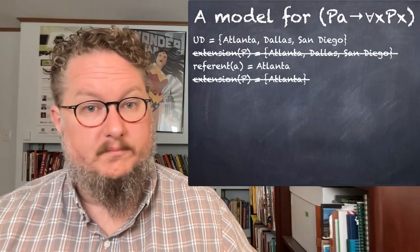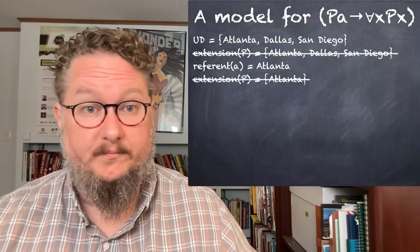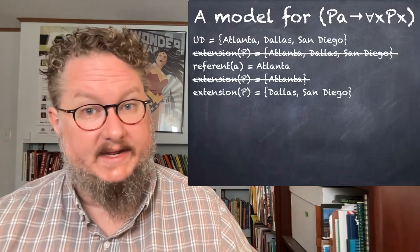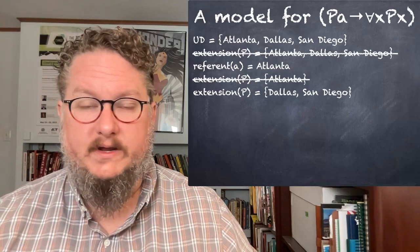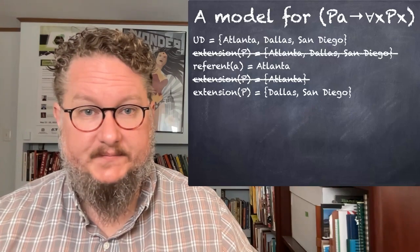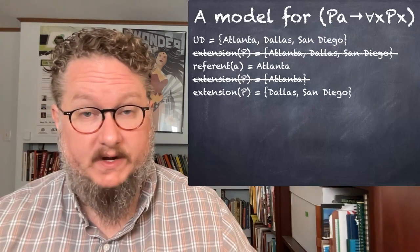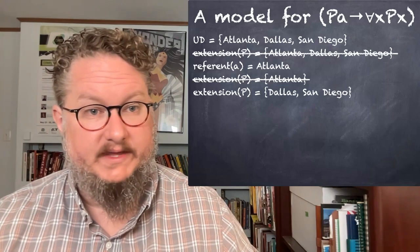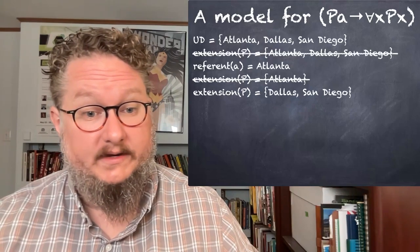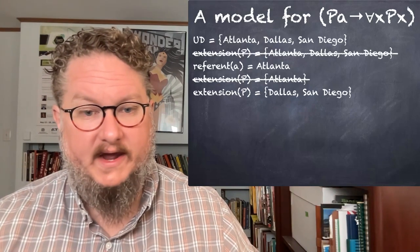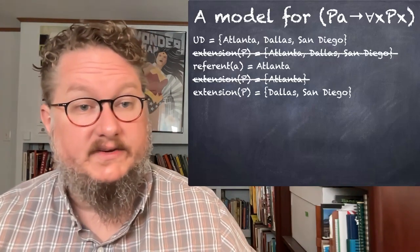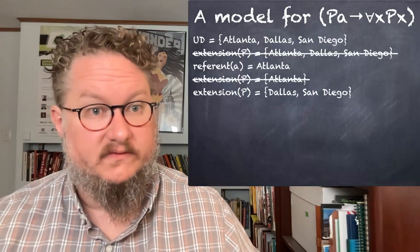Let's try one more model by changing the extension of P to include Dallas and San Diego but not Atlanta. Now PA is false — Atlanta is not in the extension of P. Whenever the antecedent of the conditional is false, the conditional itself is true. So this is a case of a contingent sentence because its truth value changes from model to model.